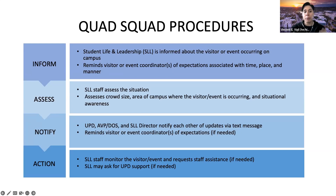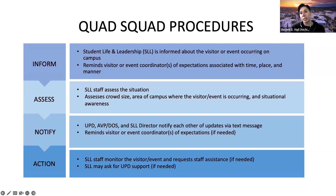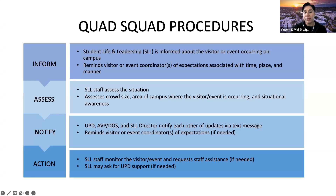Next, we notify: we have a text message chain with PD, myself, and Elisa, and we notify each other of any updates when it comes to that particular situation. We constantly remind the visitor or event coordinator of expectations — if we think they are toeing the line, we remind them exactly of what they can and cannot do. Then we take action: Student Life and Leadership staff monitors the visitor, looks at the event, and requests additional staff if needed. We may ask PD to come out; if they do, they'll stay a bit away from the situation but provide additional assistance as needed.